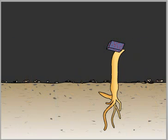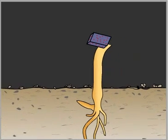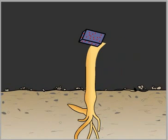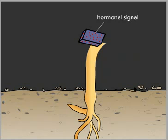When Went placed the agar block on one side of the decapitated shoot, the shoot curved away from the agar as it grew. This demonstrated that some kind of hormonal signal had diffused into the agar from the coleoptile tips.